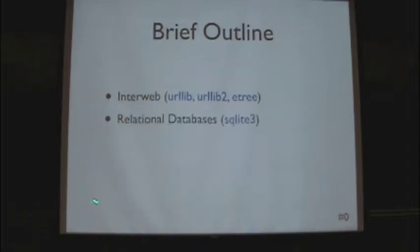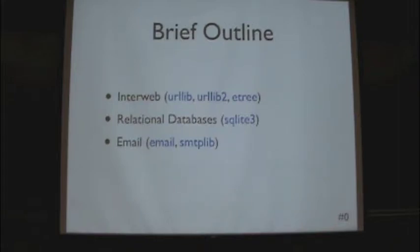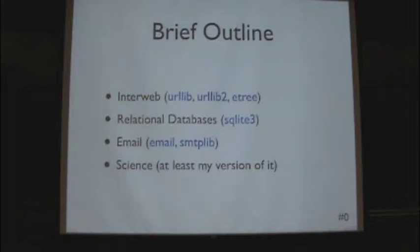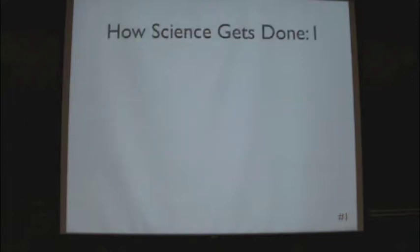A little bit about relational databases using a particular formulation called SQLite3, sending some basic email — again all from Python scripts. And at the end we're going to write a short Python script called Do Science. That's the output of this. This is my somewhat biased perspective as a postdoc here at UC Berkeley on how science gets done.